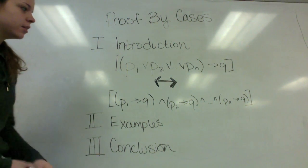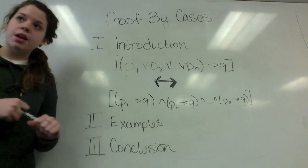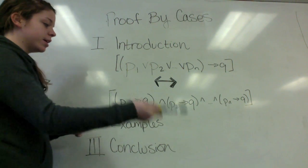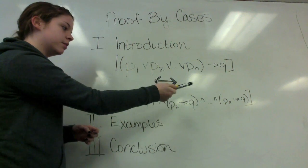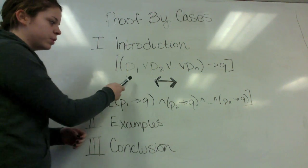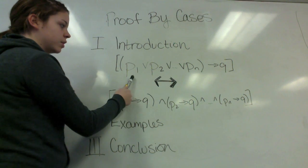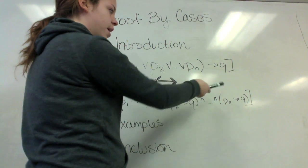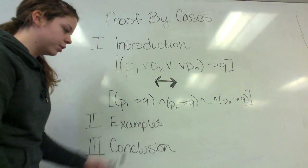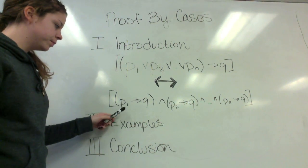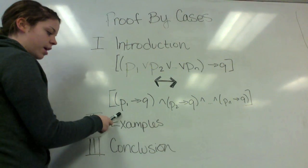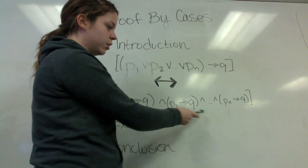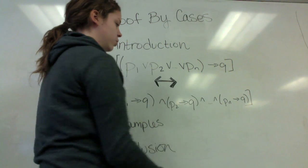What proof by cases is: basically, if we can't prove something by only using one case, we break it down into several different cases. What this is saying is that for case one, or case two, all the way to case n, each case implies Q. So for case one that implies Q, case two implies Q, all the way to case n implies Q separately.